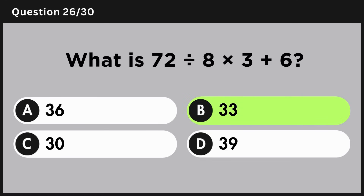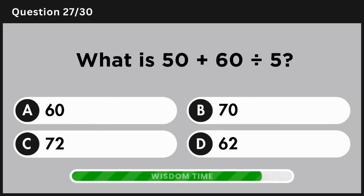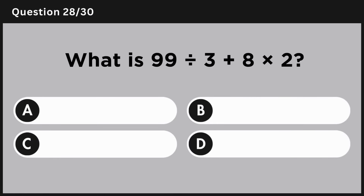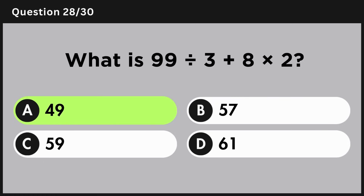Answer B: 33. What is 50 plus 60 divided by 5? Answer D: 62. What is 99 divided by 3 plus 8 multiplied by 2? Answer A: 49.